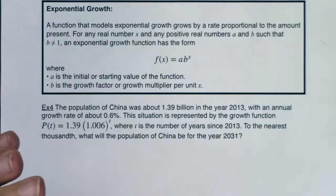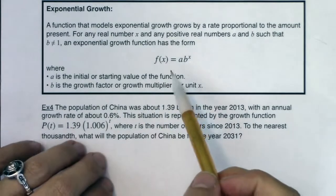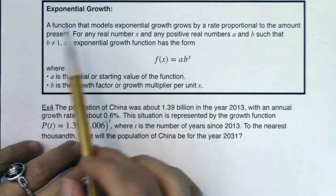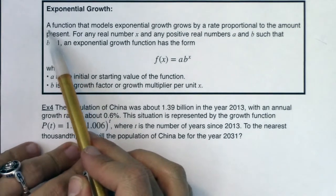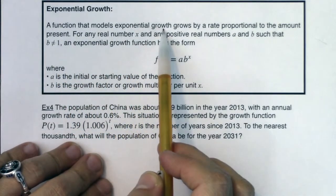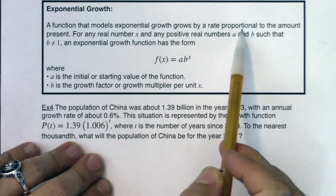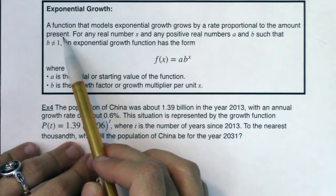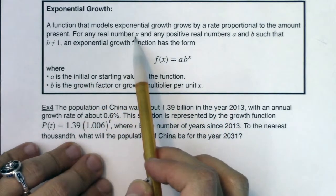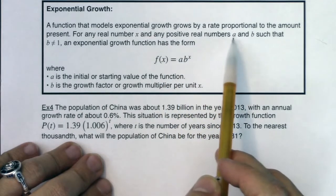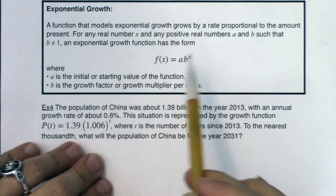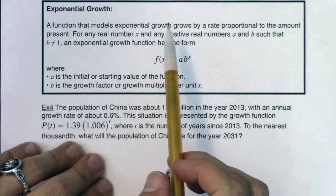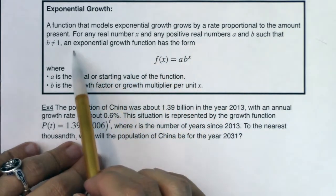So with that in mind, let's re-examine this equation with a growth model mindset. So a function that models exponential growth grows by a rate proportional to the amount present. For any real number x and any positive real numbers a and b such that b is not 1, because b equaling 1, if your base is 1, you're at equilibrium. You're not growing, you're not decaying, you're constant.